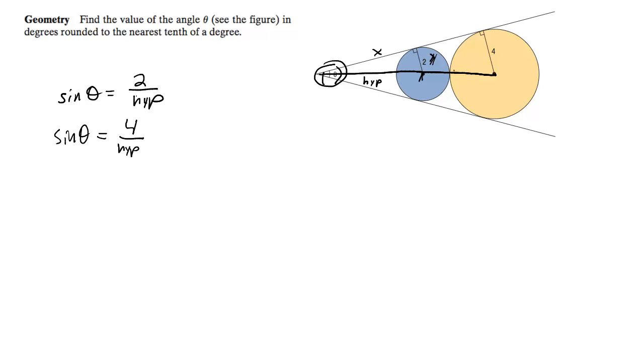Yeah, so our radius here, this is 2, this is 4, so it's going to be hypotenuse plus 6. Alright, so now we can go ahead and solve this.